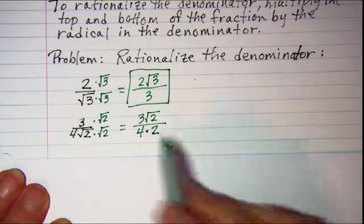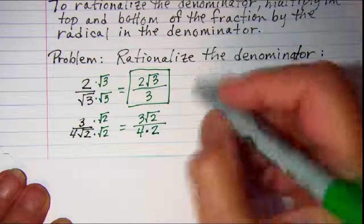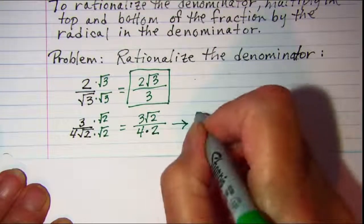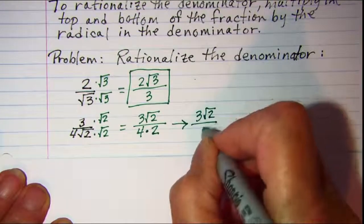One more step to simplify here. If I multiply, this becomes 3 root 2 over 8.